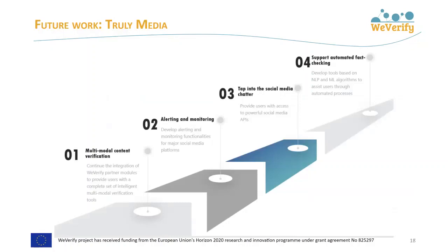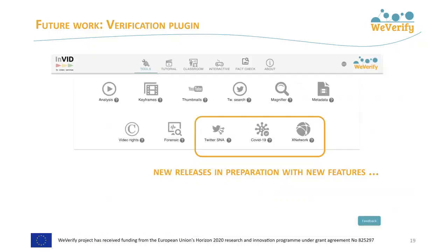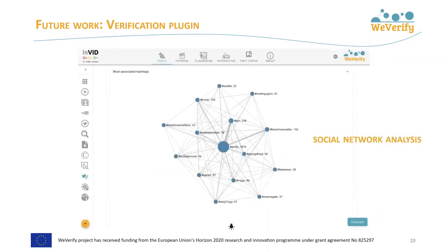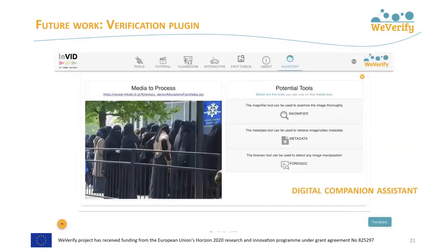Next, we'll give a sneak peek at future enhancements of WeVerify user-facing tools. More important steps are foreseen for the TrulyMedia Workbench, including continued integration of tools from WeVerify partners, functionalities to support alerting and monitoring, adding more social media sources, and a view towards automatic fact-checking. The verification plugin is being enhanced by new WeVerify functionalities currently in beta testing. One main new feature to be released soon is a Twitter social network analysis module that aims to hide technical complexity and provide automatically useful insights about disinformation propagation. Also in progress is a verification assistant or digital companion — a chatbot aiming to help and guide end users through the multiple verification tools available.